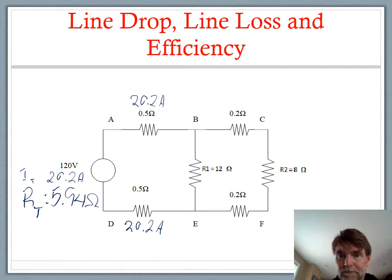So if it's 20.2 amps multiplied by 0.5 ohms, we have 10.1 volts dropped. 10.1 volts dropped there and at the bottom as well. Now we've got Kirchhoff's voltage law through that loop right there.